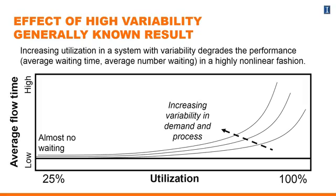So if you know that your process is expected to have a lot of variability, then you better plan for it to have less utilization. Otherwise you're going to have a lot of waiting time and longer flow times for each of your processes.